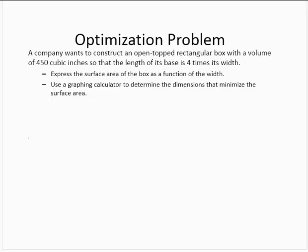A company wants to construct an open-topped rectangular box with a volume of 450 cubic inches so that the length of its base is four times the width. We're asked to express the surface area of the box as a function of the width and use a graphing calculator to determine the dimensions that minimize the surface area.